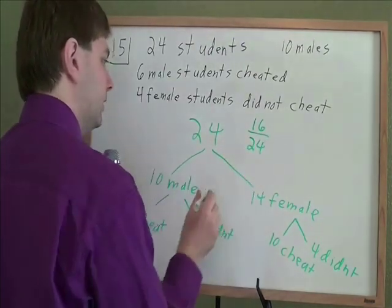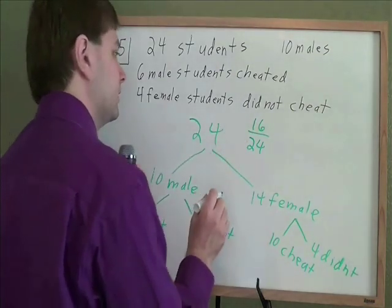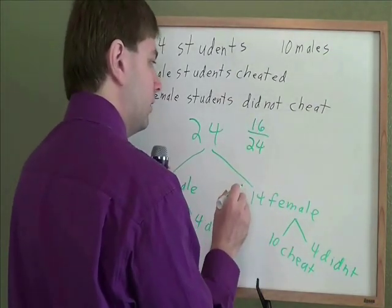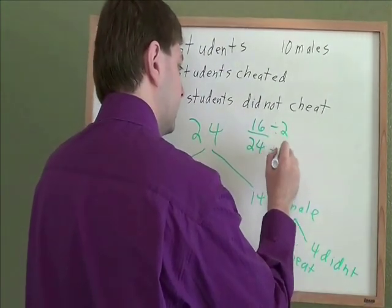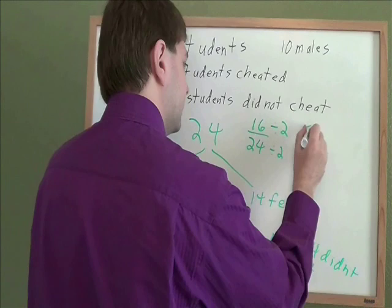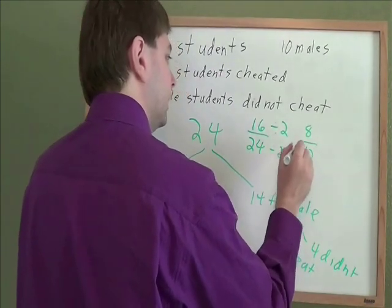So your probability of a random student cheating in this class is 16 out of 24. And then we just need to reduce this. 16 and 24, they're both even, they both divide by 2. 16 divided by 2 is 8. 24 divided by 2 is 12.